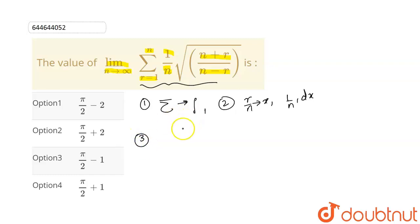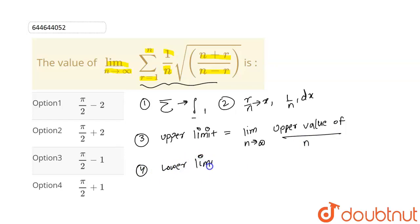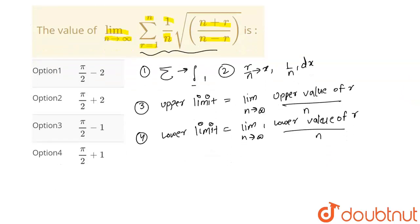The third step is to find the upper and lower limits of the integration. The upper limit equals the limit as n tends to infinity of the upper value of r divided by n. The lower limit equals the limit as n tends to infinity of the lower value of r divided by n. Now let's apply these changes to the question.